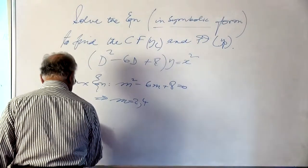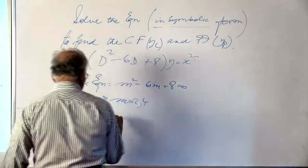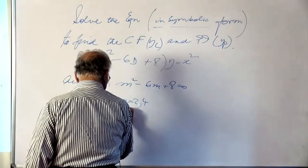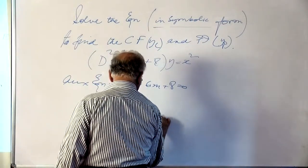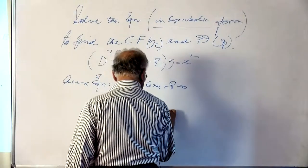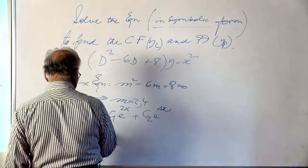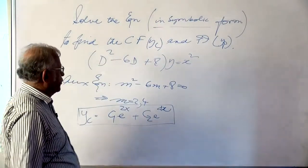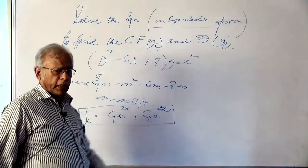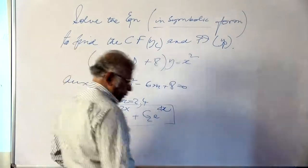So the complementary function yc is equal to c₁e^(2x) + c₂e^(4x). This part is fairly simple. We will have to spend a bit of time to find the particular integral.